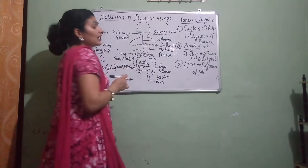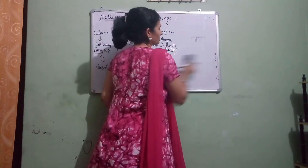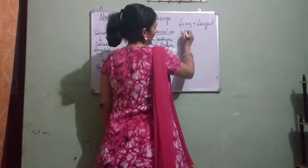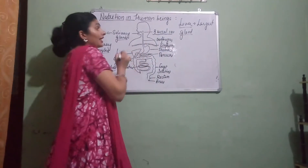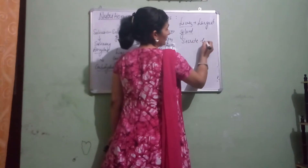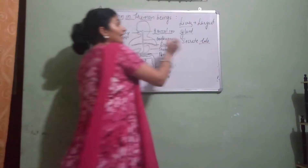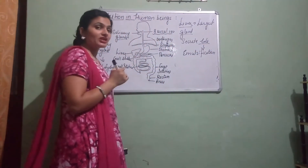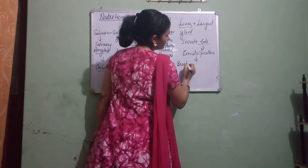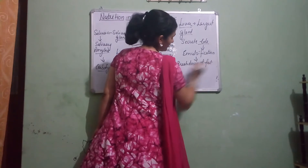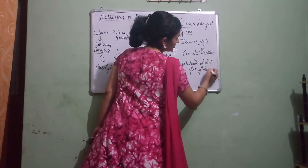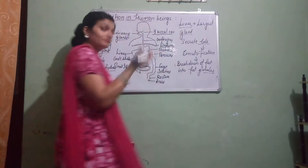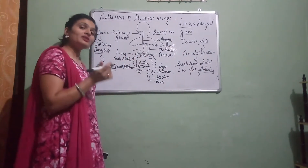The liver is the largest gland of our body, and it secretes bile. Bile is a greenish-yellow liquid that helps in emulsification. Emulsification is the breakdown of fat into fat globules. Bile is stored inside the gallbladder.